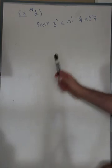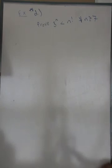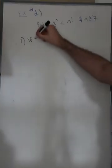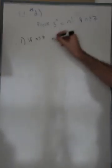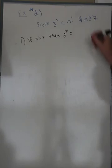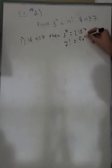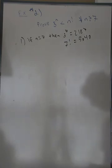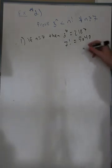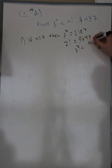We want to prove 3^n < n! when n is greater than or equal to 7. Step one, base case: if n equals 7, then 3^7 equals 2187, and 7! equals 5040. This is our base case because 3^7 is less than 7 factorial.